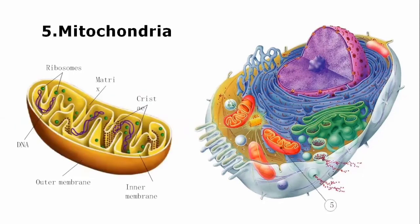Other organelle is mitochondria. Mitochondria is a rod-shaped elongated organelle. It is composed of two membranes: outer membrane and inner membrane. The inner membrane has foldings known as the cristae. The mitochondria is involved in the synthesis of ATP. It is known as the powerhouse of the cell that provides energy to the cell.